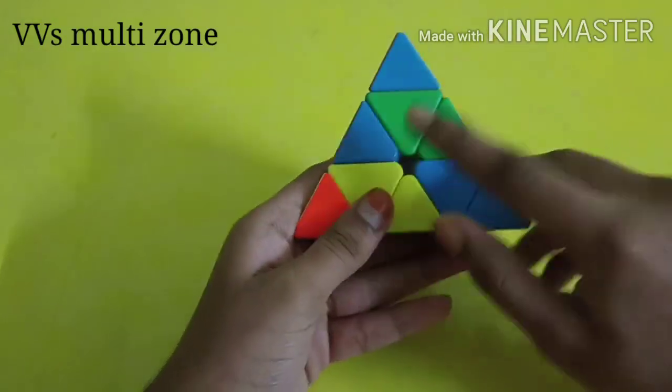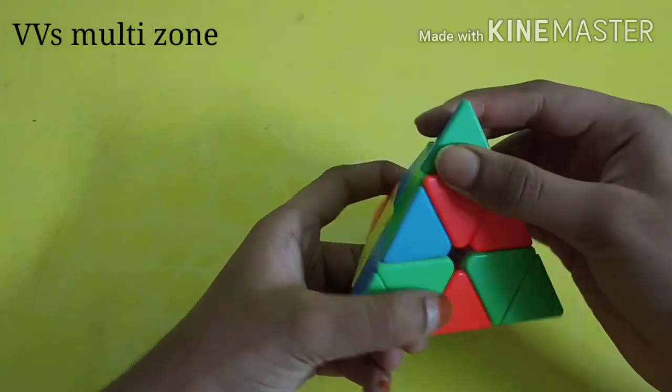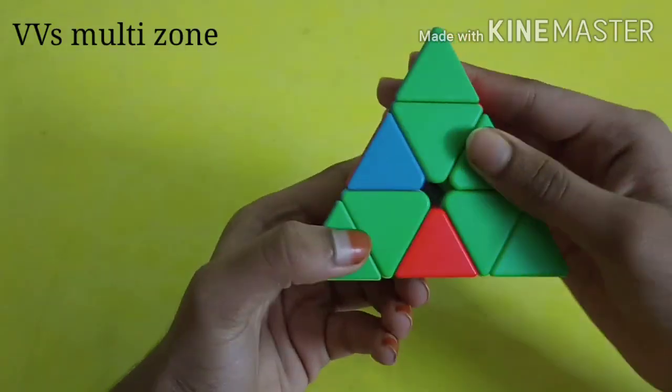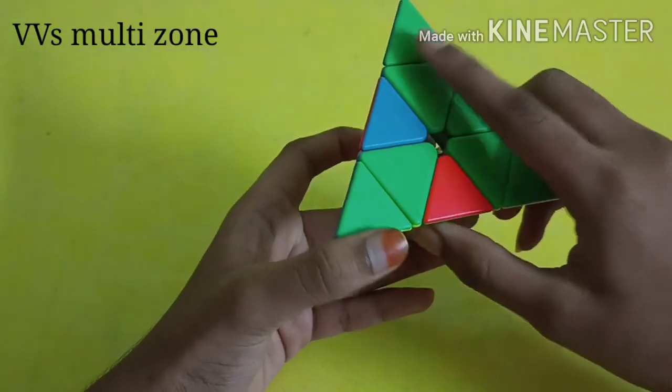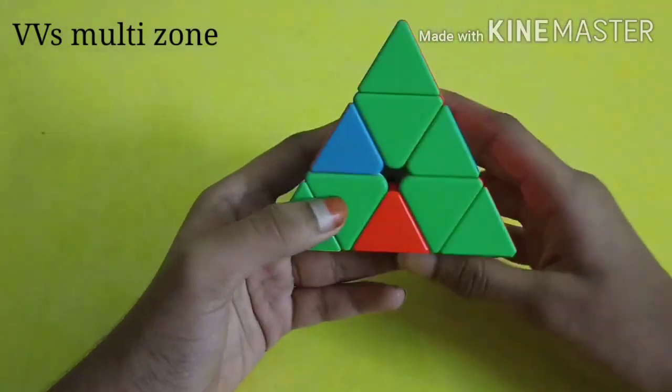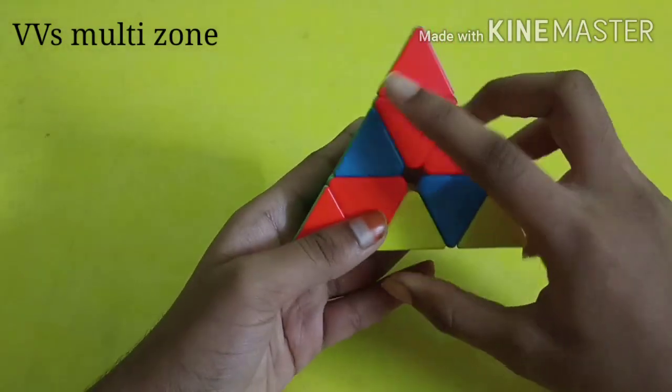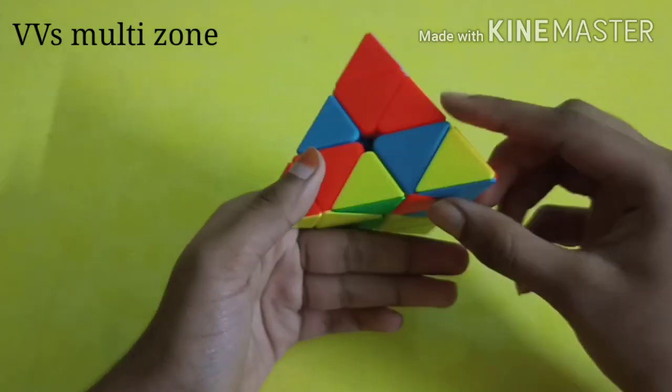I have green here so I will just turn and put this back. The green parts are solved, so this is the first step and you have to complete all the colors like this.